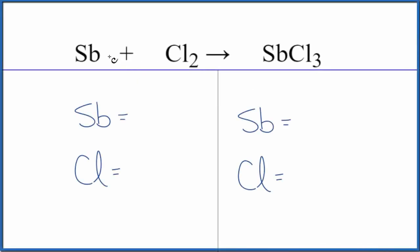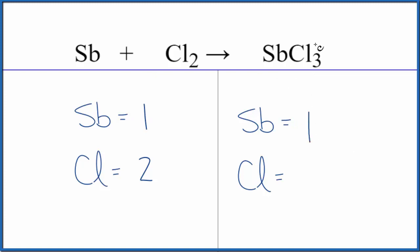In this video, we'll balance the equation for Sb + Cl₂ → SbCl₃. This is antimony plus chlorine gas. So let's count the atoms up and balance the equation. We have 1 for Sb, 2 for Cl, and then on this side we have 1 and 3.